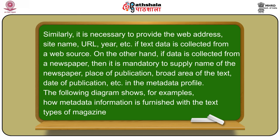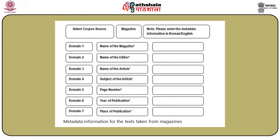We can give an example of how metadata is tagged for a newspaper or magazine. Suppose we are collecting data from a web version of a newspaper or magazine. We need to supply several metadata fields: the name of the magazine where the data is collected, name of the editor, name of the article, subject area of the article, page number of the article, year of publication, and place of publication. These are the basic metadata requirements for data collected from different sources on the web.